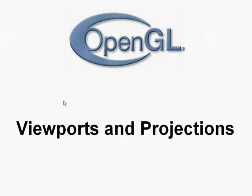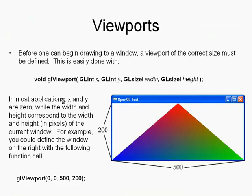In OpenGL, we're given one function call — the glViewport command — which allows us to specify inside our window where we want OpenGL to draw all of our information. To draw inside the entire window, we call glViewport with four parameters: X, Y, width, and height. If our window width is 500 and height is 200, we pass those values. X and Y is generally zero — the top left corner.